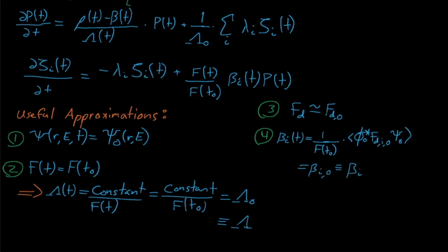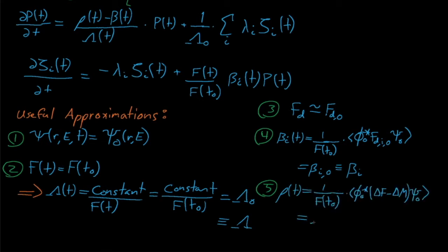Our last major assumption is to kick the exact perturbation equation to the curb and assume that our reactivity is well represented by the first-order perturbation equation. This assumption is generally extremely accurate in criticality safety problems where we're trying to understand the impact of cross-section uncertainty, but it can break down during reactor transients where we have significant changes in the fuel or moderator temperature, the moderator density, or the reactor flux shape.